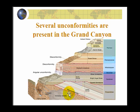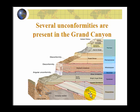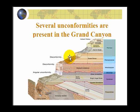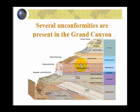We have a non-conformity down here — igneous and metamorphic rocks in contact with sedimentary. The Unkar group is indeed sedimentary. We have an angular unconformity where these beds are at an angle relative to the horizontal beds sitting above it. And we have a series of disconformities up here where there have been time gaps as these rock units were being deposited through time.